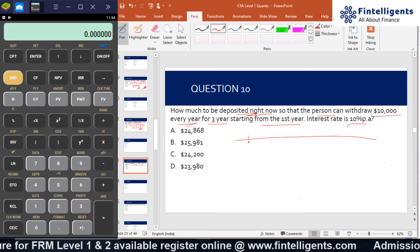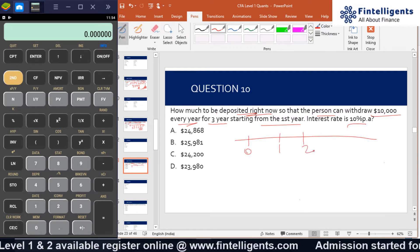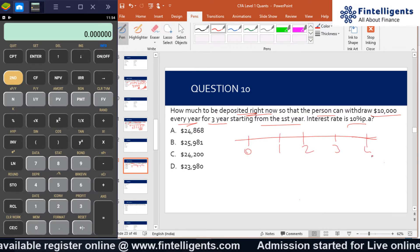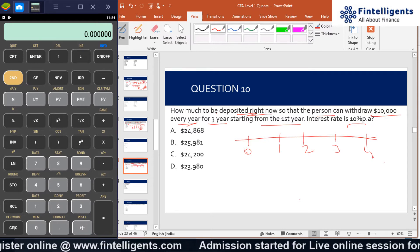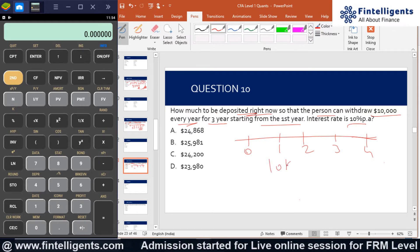The interest rate is 10%. Drawing the timeline: time 0, 1, 2, 3, 4. The person wishes to withdraw $10,000 starting from the first year for 3 years.